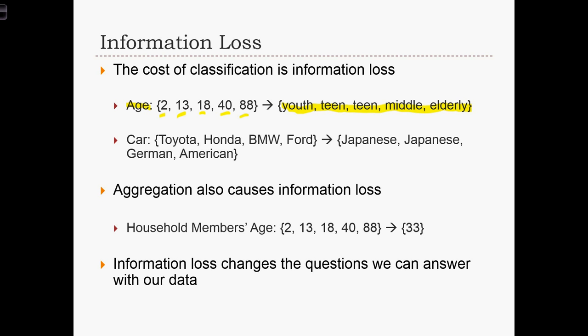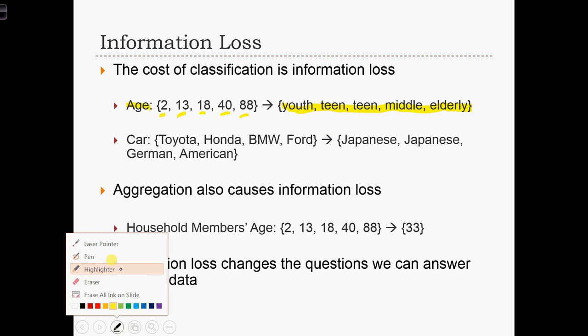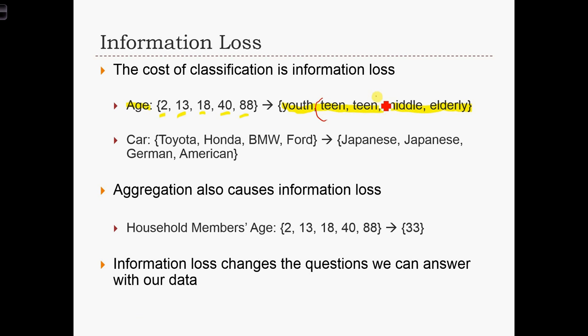But what information have we lost? If we are only provided with the classified data set, we notice that we have two data values that appear to be teens. But without access to the original data, can we tell anything about the difference between these two teens? The answer is no. We don't actually know what age these teens are, other than that they must be between 13 and 18. This hampers our ability to use age in further analysis.